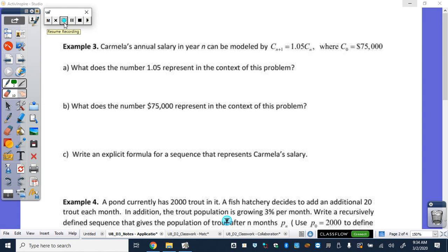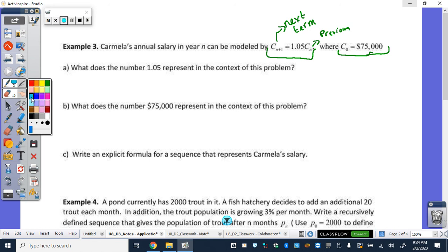So we have Carmela's annual salary. And year n can be modeled by this recursive formula here. Let's take a look at our notation. This is a little bit different. n plus 1. What does that represent? Next term. We didn't do too much with next term, but that's still next term. So therefore, if I'm at n plus 1, that means n is n plus 1's what term? Previous. So this is still recursive like we're used to. They're just changing it a little bit. n is the previous term to n plus 1. And we're starting at $75,000. She has the initial annual salary of $75,000. That would be wonderful.